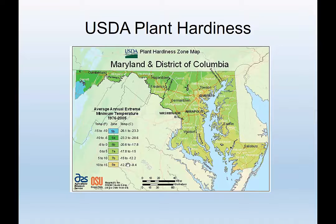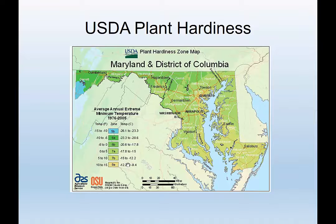USDA plant hardiness zone maps are useful tools when looking at what will grow where. These are always good references, though they're probably due for an update given how our climate data are going. The zones are based on average annual minimum temperatures — basically the coldest average minimum temperatures — showing what will and won't grow in different zones. For Maryland and D.C., you can see the range of temperatures, with coldest temperatures in the higher elevation areas.